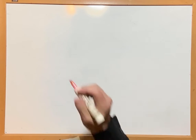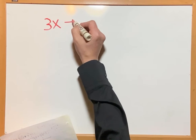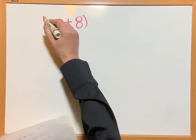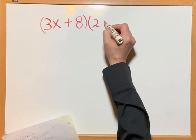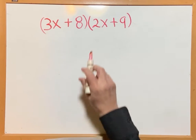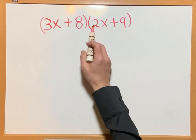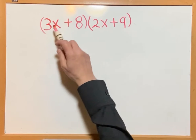Good morning everybody. Yesterday we started multiplying with the FOIL method. Most of you look like you've got it down, but some of you still have problems. Yesterday we multiplied two binomial expressions, and the coefficient of the variable in both binomials was only one.